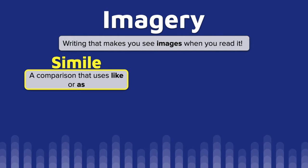Our first example of imagery is a simile — and this is a word that I always spell wrong because it does not sound the way it looks. Simile is a comparison that uses like or as.